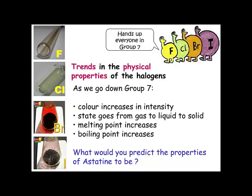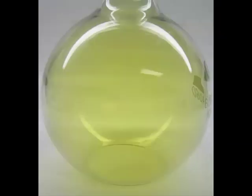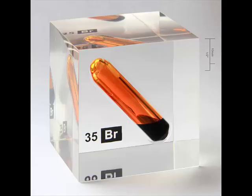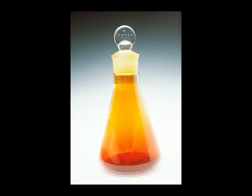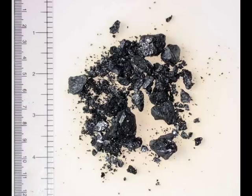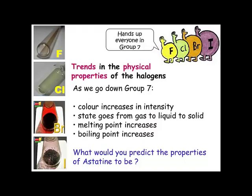There are some trends in the physical properties of the halogens. As we go down Group 7, we see an intensity of colour which increases. Fluorine is a yellow gas, chlorine is a green gas, bromine is a dark red liquid which forms a red-brown vapour, and iodine is a dark grey solid with purple vapours at room temperature. The elements go from gas, gas, liquid, solid — therefore the melting point and boiling point both increase as you move down the group.